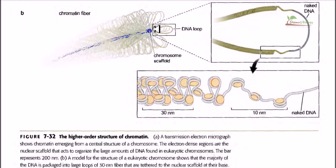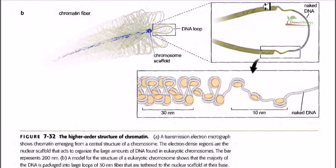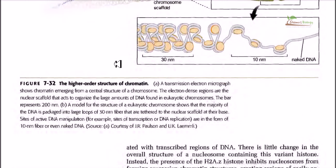If you zoom into one loop of this chromatin — called a DNA loop — you find wrapping of DNA inside the loop, and at the end of the loop there is naked DNA coming out. At the point where the curvature is happening, it is free of coiling — just naked DNA not arranged into beads. In the coiled regions there is the 30 nanometer fiber, either solenoid or zigzag arrangement. At the ends, naked DNA appears because all the zigzag structures cannot be accommodated there. Without scaffold proteins, these fibers cannot be arranged to make a chromatin fiber.